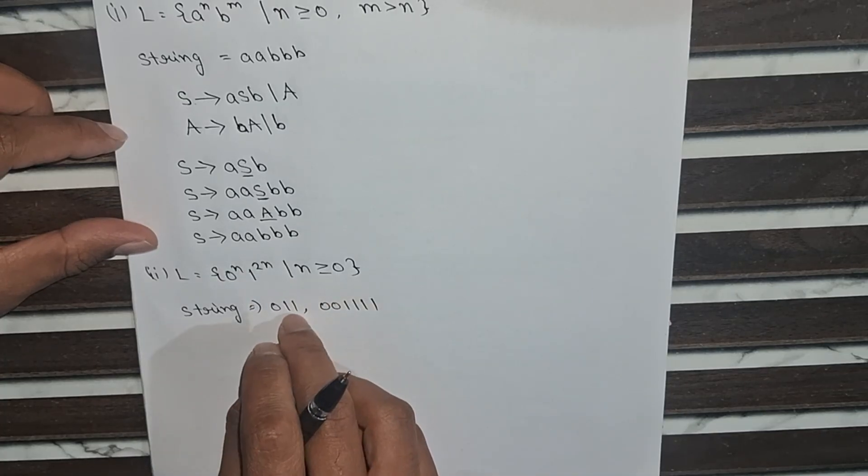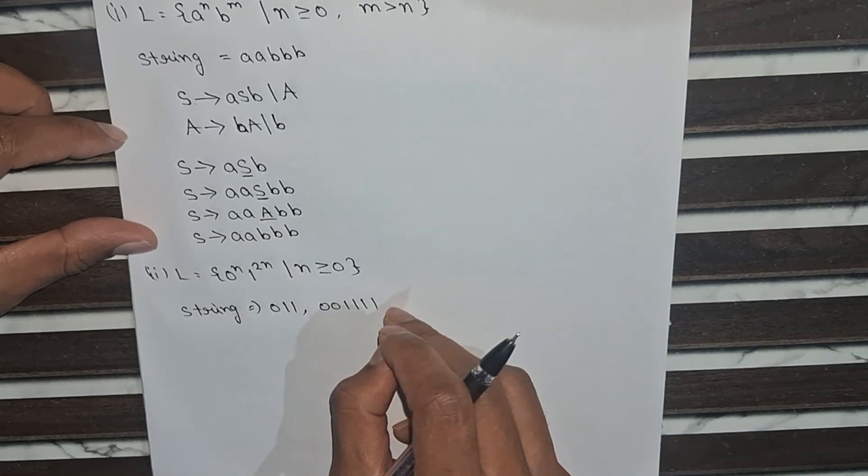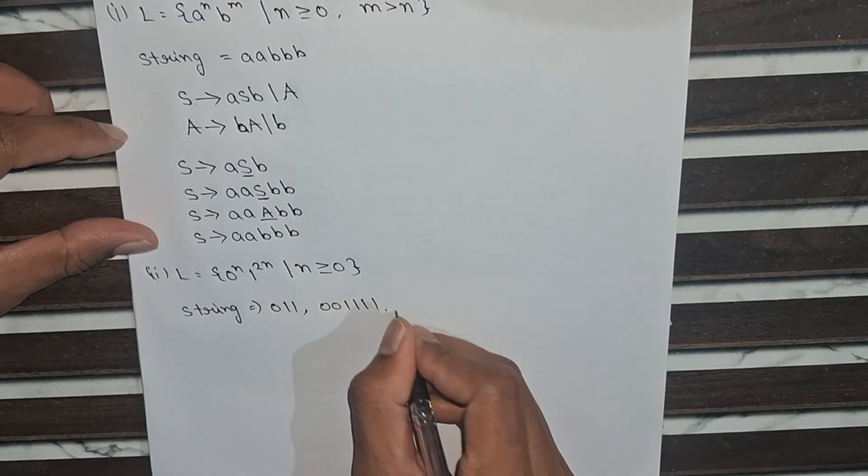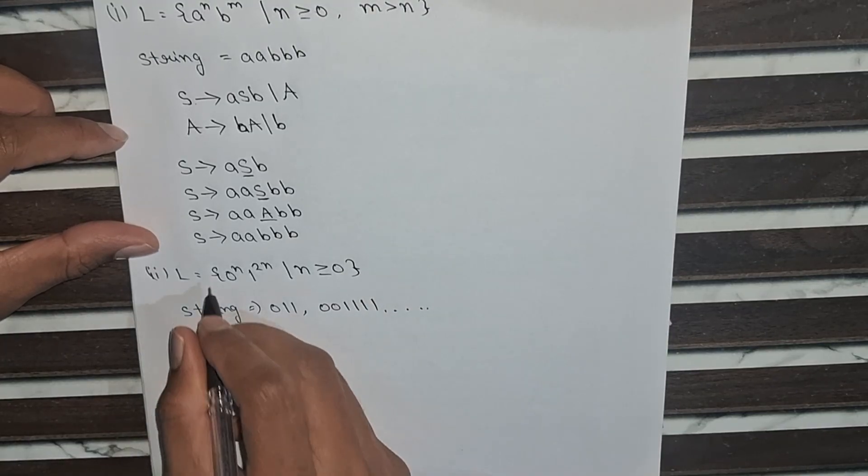It means 1 zero, then 2 ones, 2 zeros, then 4 ones, if 3 zeros, then 6 ones. Like this it will go on. Now we will write the CFG for this language.